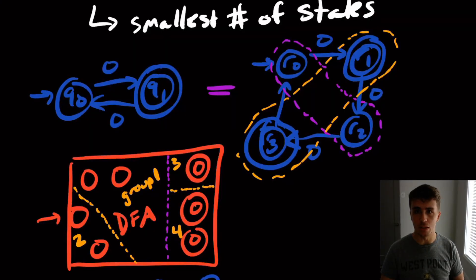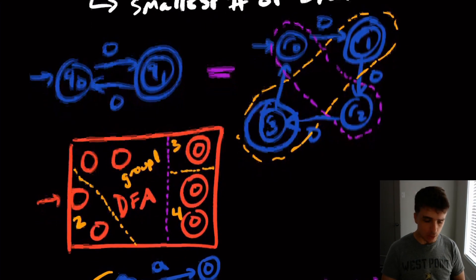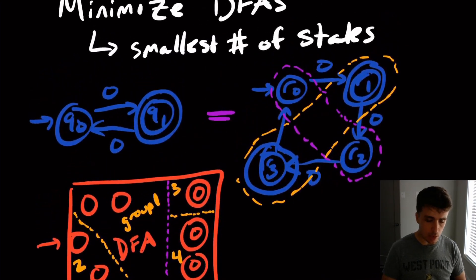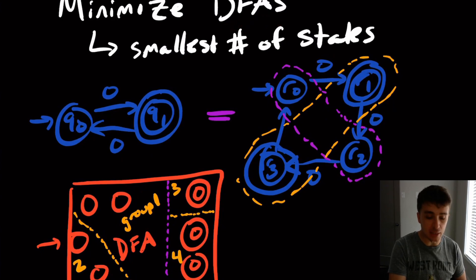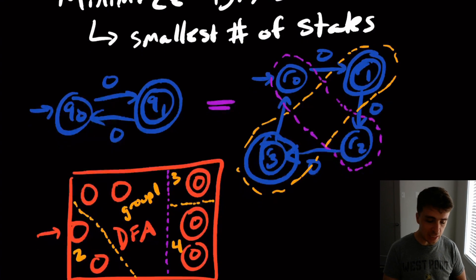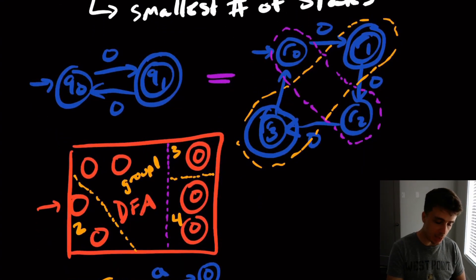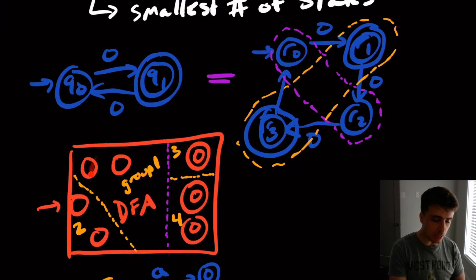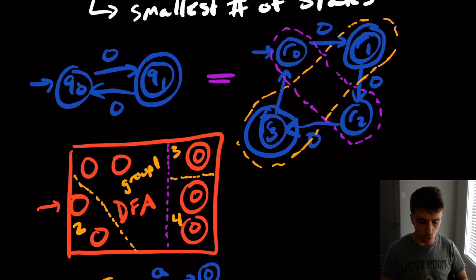Welcome back to another edition of Easy Theory. We looked at the problem of finding the smallest DFA given a DFA. What we were able to show is that you can find the smallest number of states in a DFA that recognizes the same language by grouping all of the states together and then trying to refine the groups more and more.